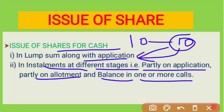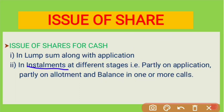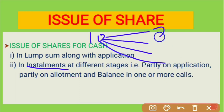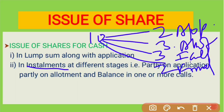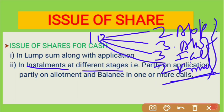In the installment case, the company may demand, for example, ₹2 on application, then ₹3 on allotment, then ₹3 as the first call, and the remaining ₹2 as the final call. When the company demands money in this way, it is called in installments at different stages. These stages are: application, allotment, first call, and final call.